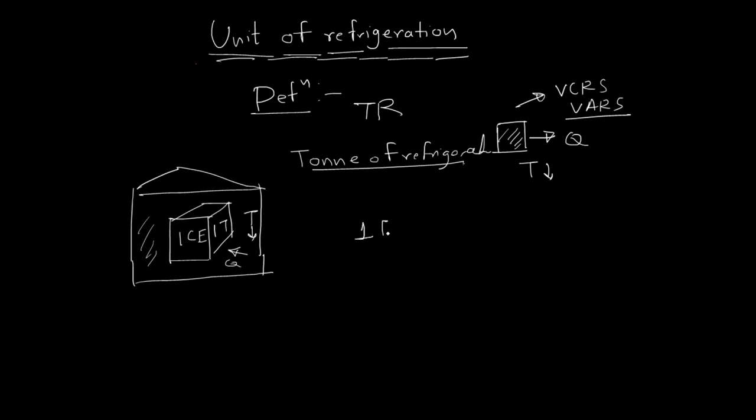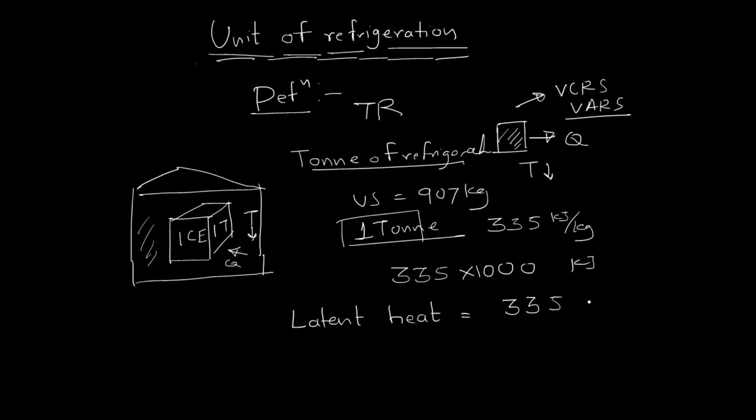Suppose we bring one ton of ice into a room, and we know latent heat of ice is 335 kJ per kg. That means from the room it will take 335 times 1000 kJ of heat. But this is not a metric ton - this is a US ton, which is equal to 907 kg. Therefore, the latent heat taken from the room will be equal to 335 kJ per kg multiplied by 907 kg.